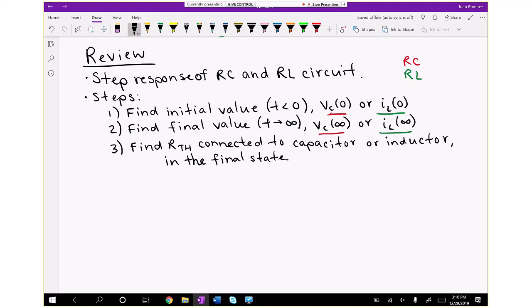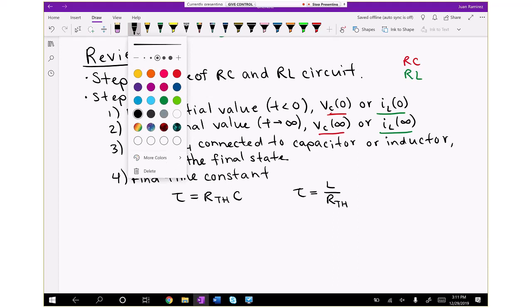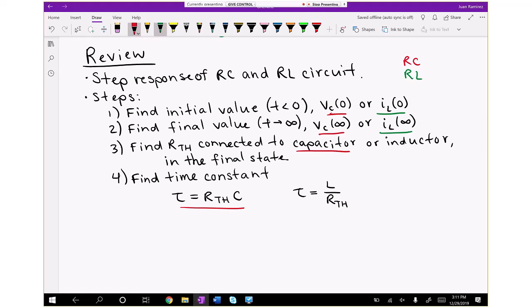Fourth step is to find the time constant. For an RC circuit, that's R_Thevenin times the capacitance. For an RL circuit, it is inductance divided by R_Thevenin.